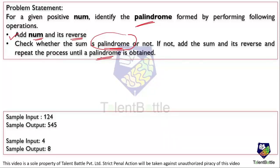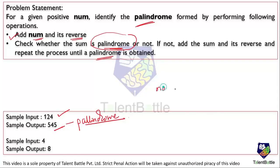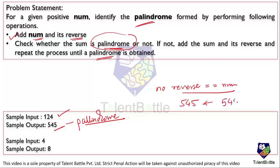You perform these operations until you reach the palindrome number, and once you reach it, the process stops. For example, if the sample input is 124, the output should be 545, which is a palindrome number. A palindrome number is one whose reverse equals the number itself — the reverse of 545 is also 545.